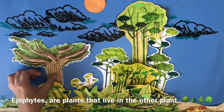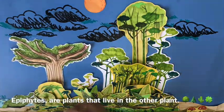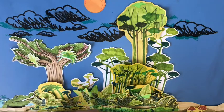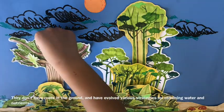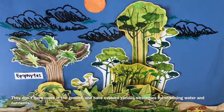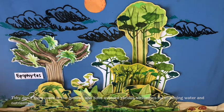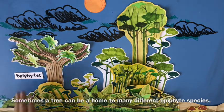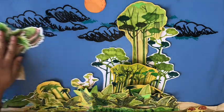Epiphytes are plants that live on other plants. They don't have roots in the ground and have evolved various strategies for obtaining water and nutrients. Sometimes a tree can be home to many different epiphyte species.